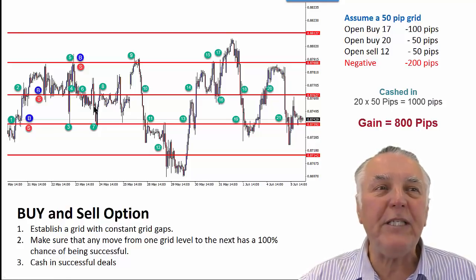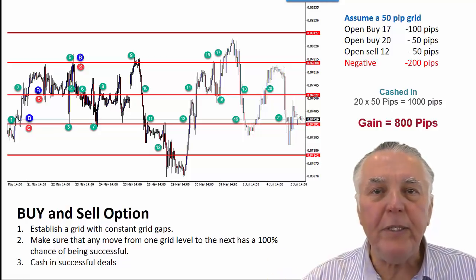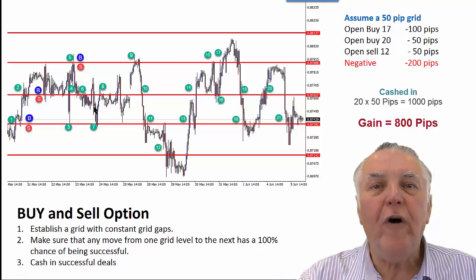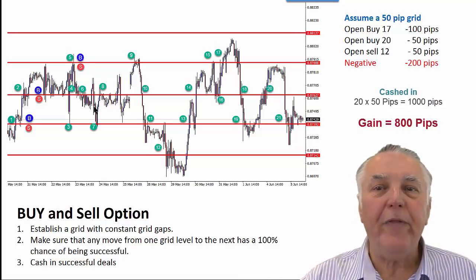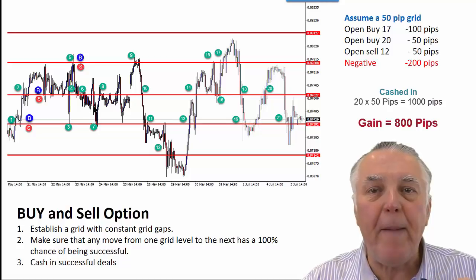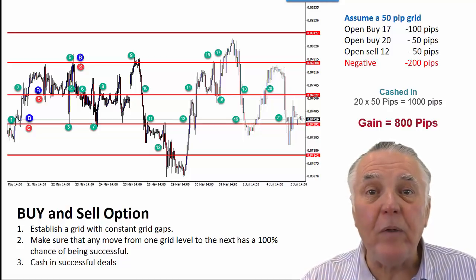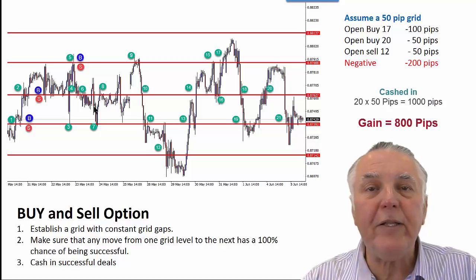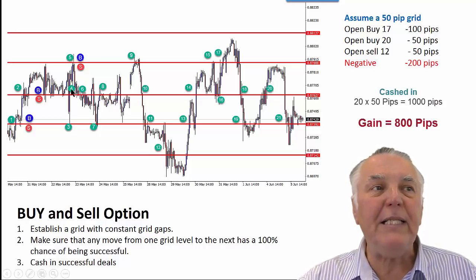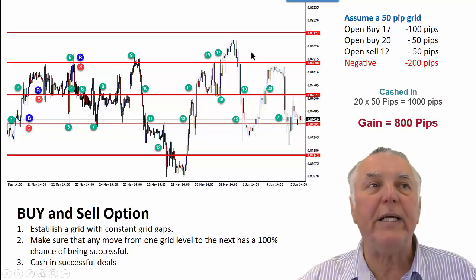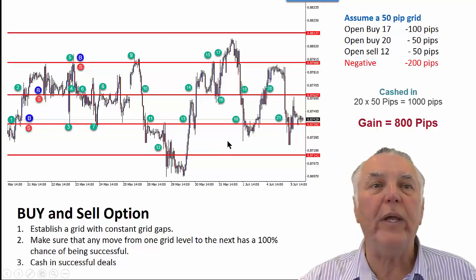It sounds complicated, but if you stick to the concept that every grid position has to have a chance of going positive if it moves away from that position — and the only way you can do that is by having a buy and a sell at that level — not necessarily at the exact point it touched the grid line, but at that level there should always be a buy and a sell. These numbers are all cash-in numbers, so two is a cash in, three is a cash in, four is a cash in, five is a cash in, and so on.